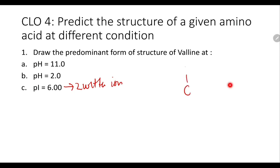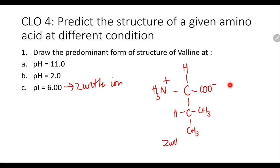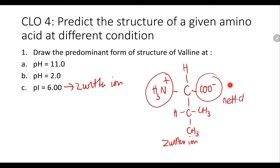At the isoelectric point, valine exists as a zwitterion: both functional groups carry a charge. NH₂ accepts H⁺ from the carboxyl group and becomes NH₃⁺, while the carboxyl group donates that H⁺ and becomes COO⁻. The side chain remains unchanged. The net charge of the zwitterion is zero, and this zwitterion only exists at the isoelectric point.